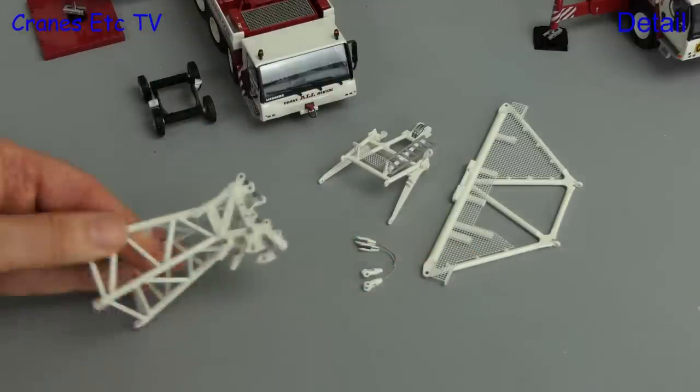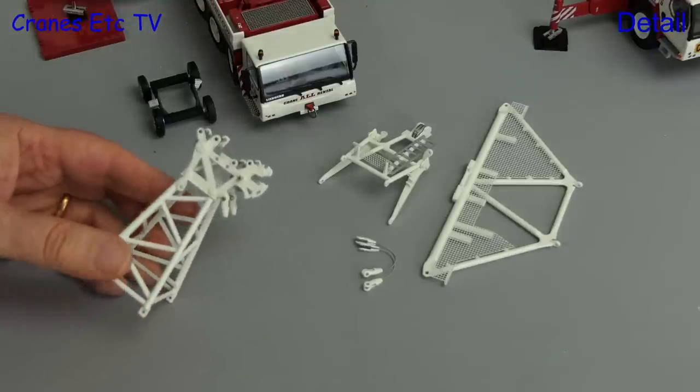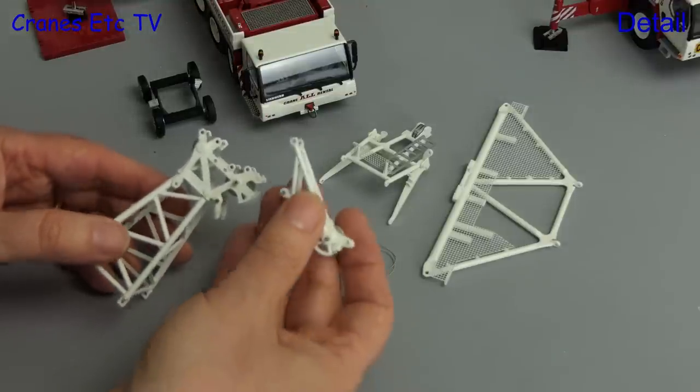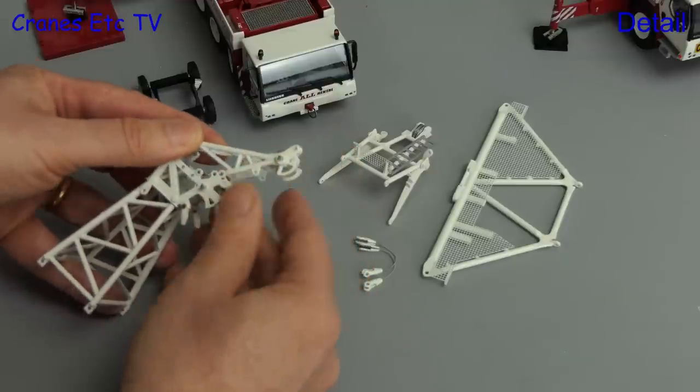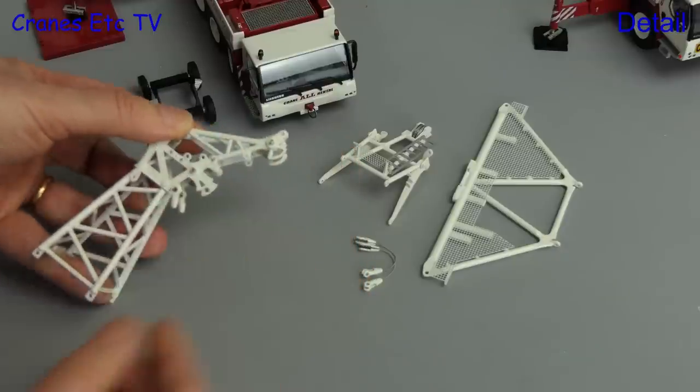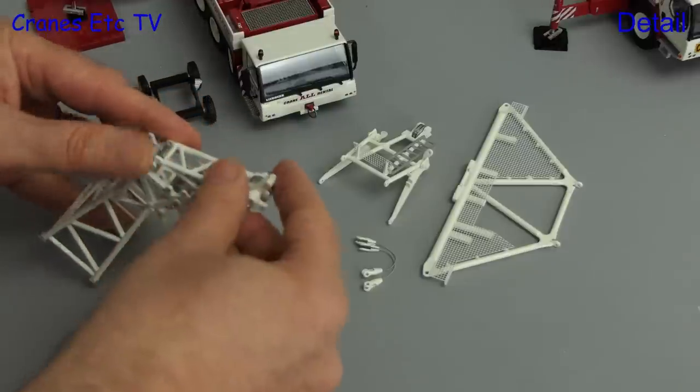Also included is a short length jib head and interestingly there's also an additional boom nose and this could be fitted to either jib head section. That would allow you to run two hooks if you want and you can do that because there is an extra winch in the luffing gear assembly.